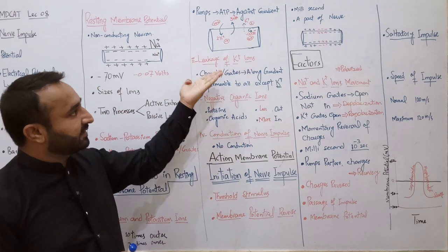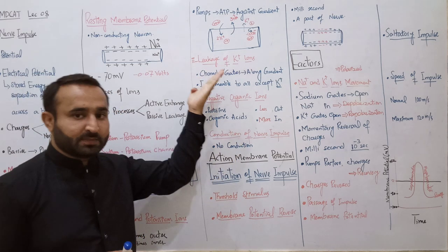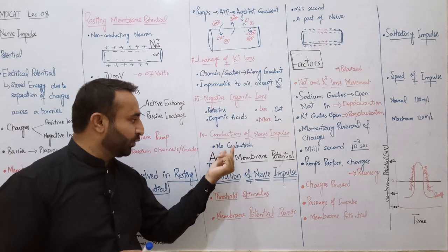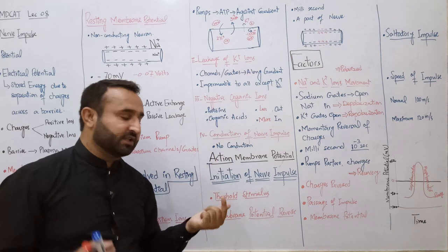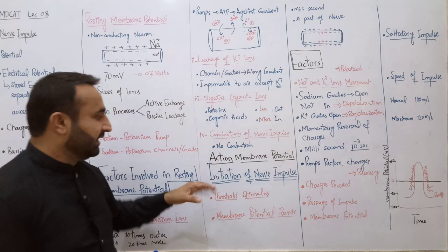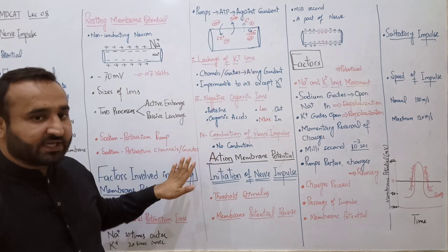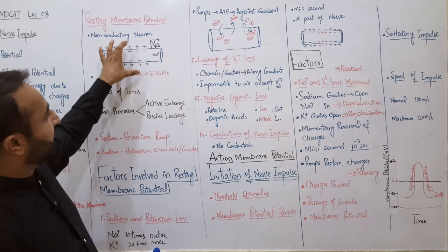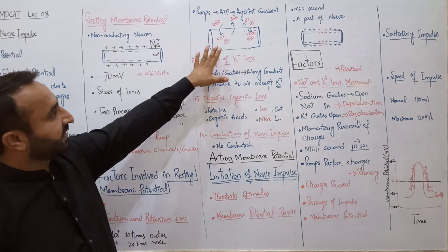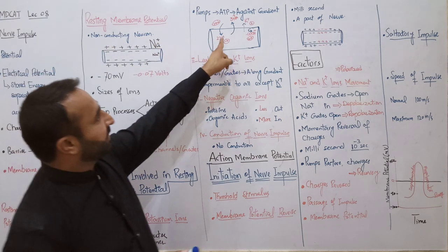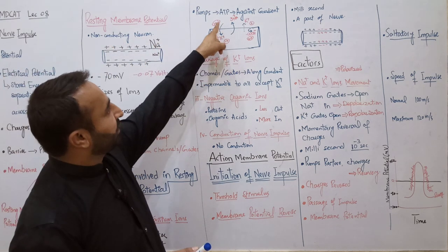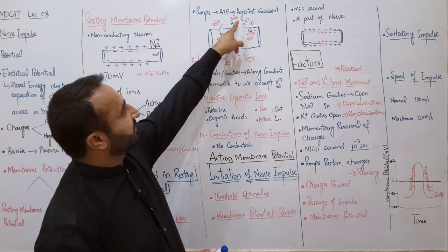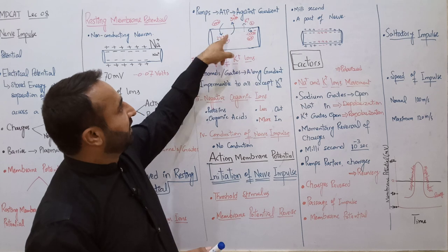Resting membrane potential میں کوئی nerve impulse conduct نہیں ہو رہی - no conduction is taking place۔ یہ resting membrane potential کا diagram ہم نے draw کی۔ جب دو potassium ions اندر آتے ہیں تو اس کے حساب سے 3 sodium باہر جاتے ہیں۔